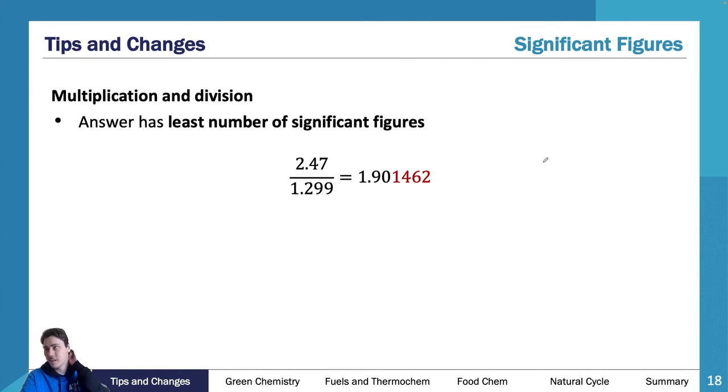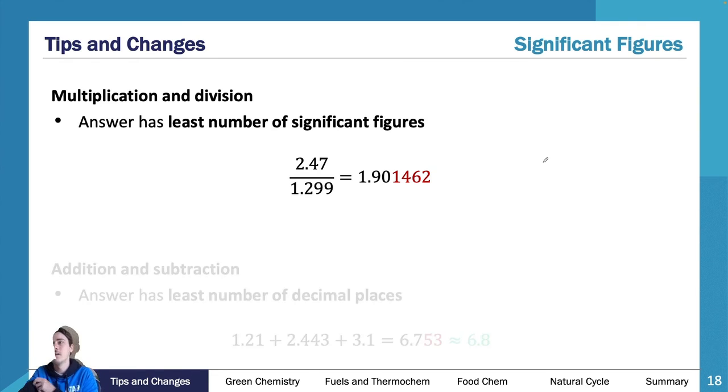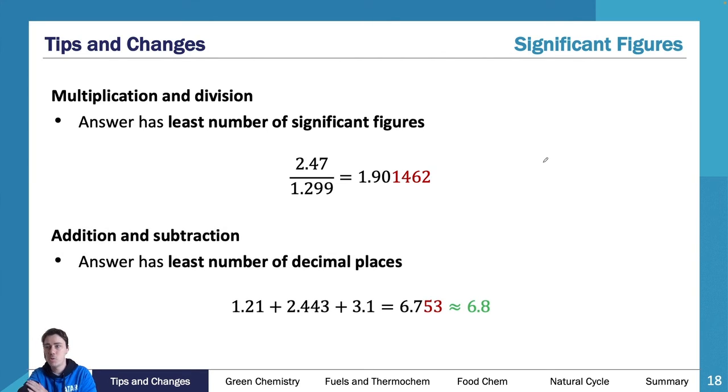Also, some other aspects: if you are given two numbers to divide or multiply - maybe you're doing a moles calculation - and one of them is to three significant figures and one is to four, you go to the least number of significant figures. Same with addition and subtraction - if you are adding numbers with different significant figures, you go to the least.